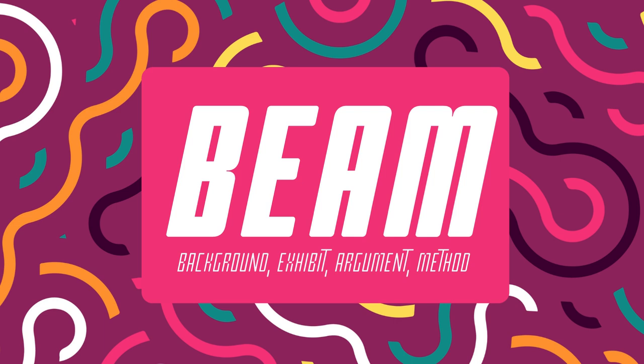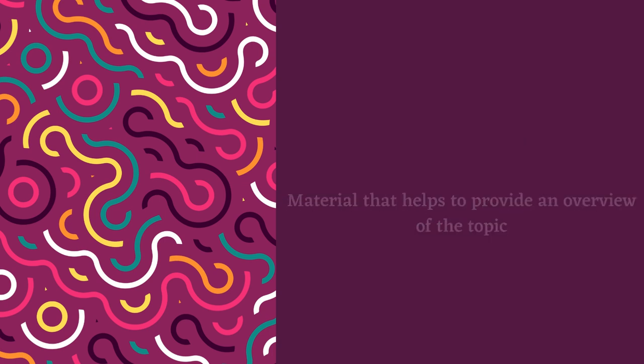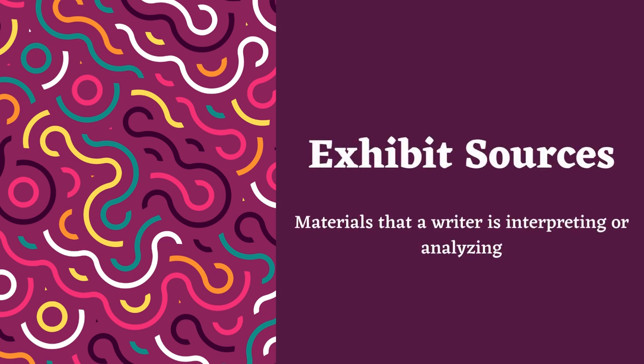These are background sources, exhibit sources, argument sources, and method sources. A background source is a material that helps provide an overview of the topic, often core concepts and facts that are well-established within the field. Exhibit sources are the materials that a writer is interpreting or analyzing. This can also be used to provide an example or to give evidence for one's own claim.